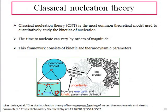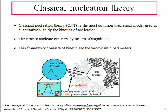Now let us see the Classical Nucleation Theory. This part needs very deep explanation, but for now I am going at a surface level, just describing the fundamental equation which is the basis of the Classical Nucleation Theory. CNT is the most common theoretical model used to quantitatively study the kinetics of any nucleation — how fast crystals will be developed in any particular fluid.